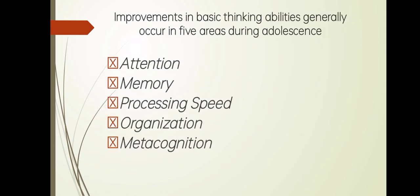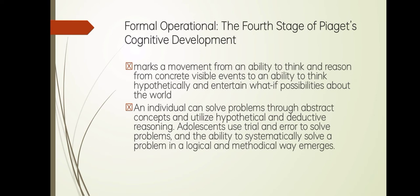Improvements in basic thinking in general occur in five areas during adolescence. The five areas are: attention, memory, processing speed, organization, and metacognition.